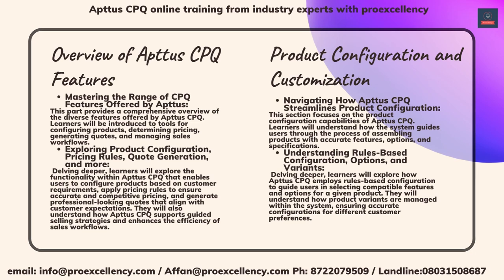Product Configuration and Customization: Navigating how Aptus CPQ streamlines product configuration. Learners will understand how the system guides users through the process of assembling products with accurate features, options, and specifications. Delving deeper, learners will explore how Aptus CPQ employs rules-based configuration to guide users in selecting compatible features and options for a given product. They will understand how product variants are managed within the system, ensuring accurate configurations for different customer preferences.